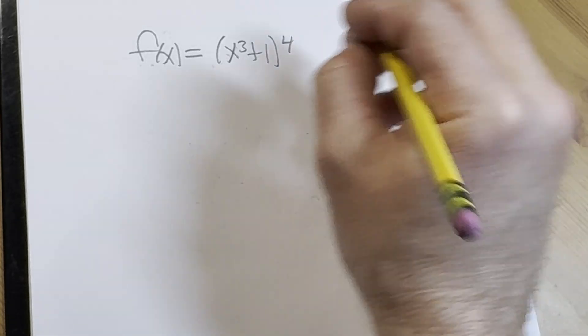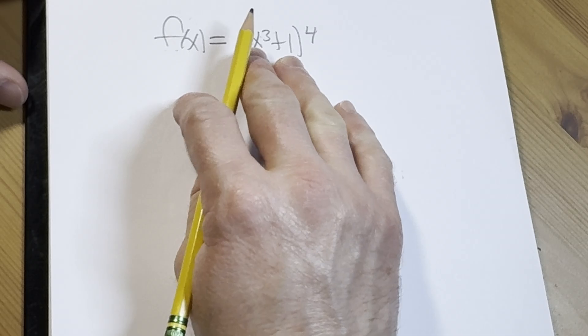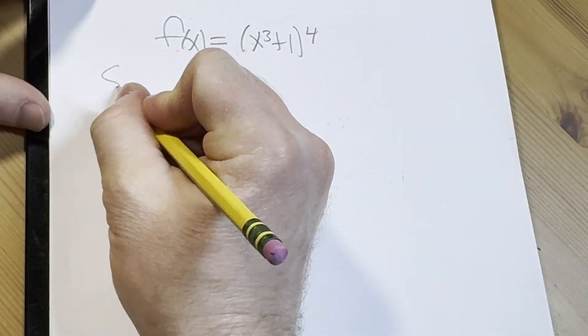In this problem, we are going to find the derivative of f(x) = (x³+1)⁴, and that entire quantity is being raised to the fourth power. So let's go ahead and work through it.